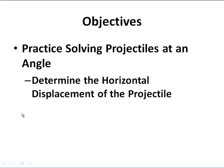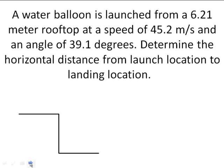Hey guys, Mr. Post here, and today we'll be practicing solving projectiles that are launched at an angle. We're going to be specifically determining the horizontal displacement of these projectiles. A water balloon is launched from a 6.21 meter rooftop at a speed of 45.2 meters per second at an angle of 39.1 degrees. And we're going to try to determine the horizontal distance from the launch location to the landing location.